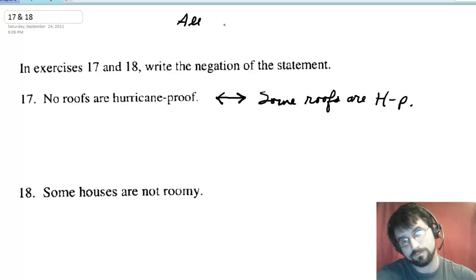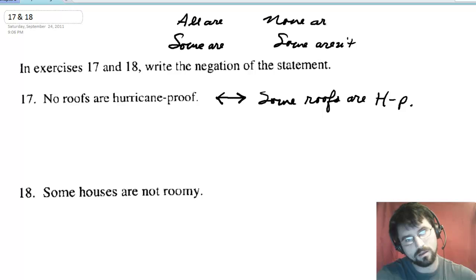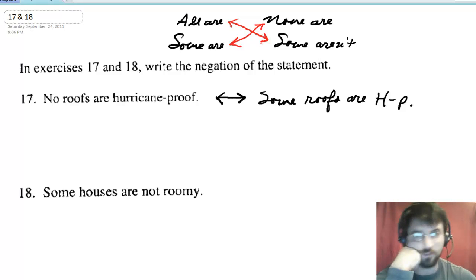Remember, all, none, some are, some aren't. All are, none are. This is how your teacher told you they were related. Your elementary school teacher said the opposite of all is none. The opposite of some is some are not. But that is not true. Actually, the opposite of all is at least one is not, or some aren't. And the opposite of none are is at least one is. So the negations travel along those red lines.